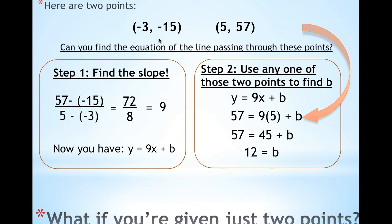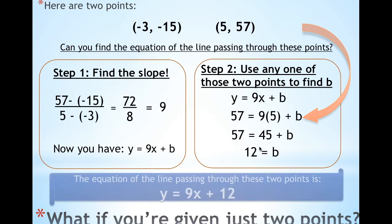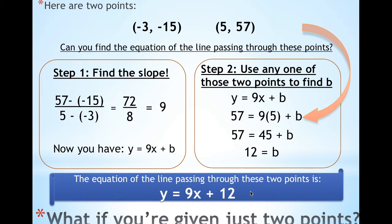Had you used the first point (−3, −15), I promise that you would have gotten the same b. So when asked for the equation of the line passing through these points, the final answer is y = 9x + 12.